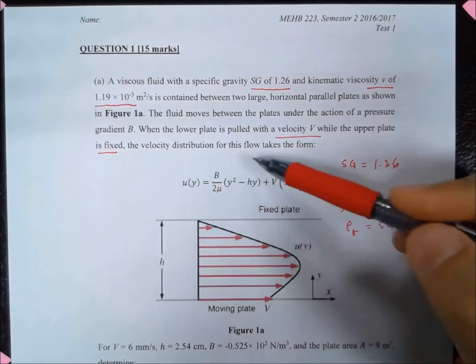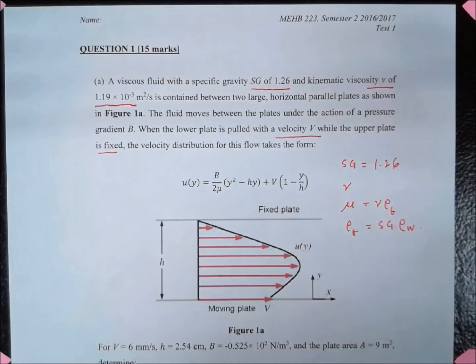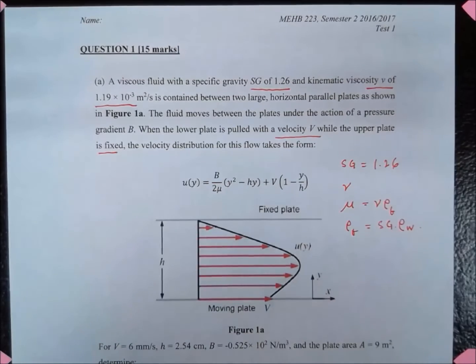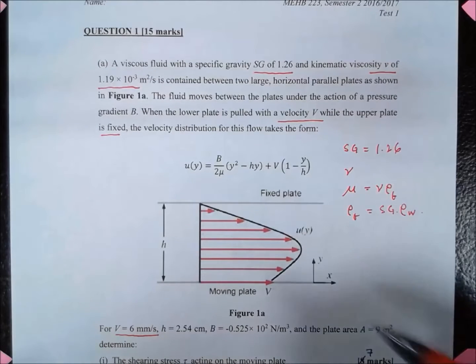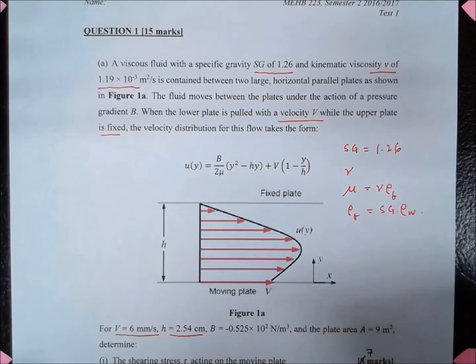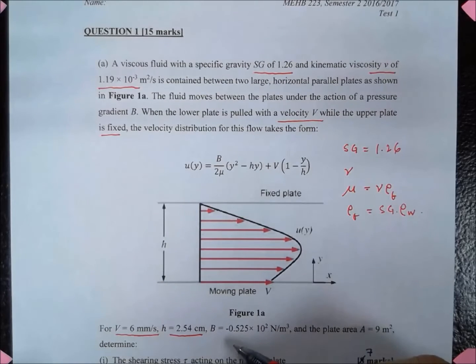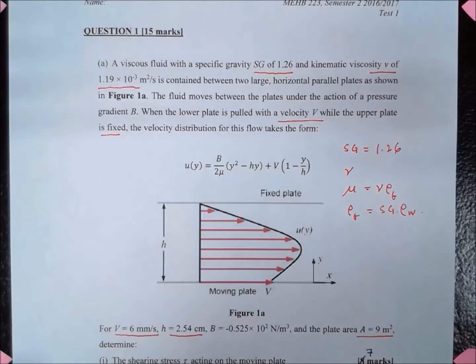The velocity distribution for this flow is given by the following equation. Given also that the velocity is equal to 6 mm per second, the distance between the plates h is equal to 2.54 cm, and B is a constant as given here. I think that B is actually negative because the pressure gradient is negative. And the plate area is given to be 9 meter squared.